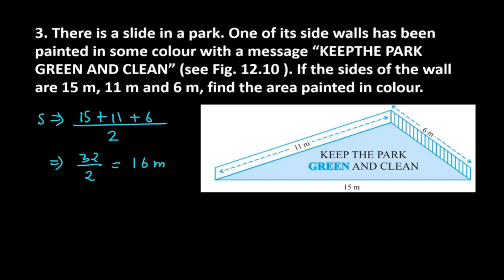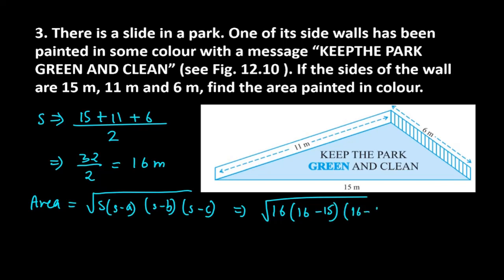Now you have to find out the area. Area kaise find out karoge? It will be root of s times (s minus a) times (s minus b) times (s minus c). You have to substitute the s value. It will give you 16, then 16 minus 15, then 16 minus 11, then 16 minus 6.